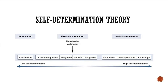Now we move toward the more highly self-determined, intrinsically motivated part of the continuum. Stimulation is when you do an activity because it makes you feel good — because of the pleasure, fun, and excitement you feel. Those are internal rewards, which is why it's considered intrinsic motivation. Then there is accomplishment, which is the pleasure and satisfaction you feel after feeling accomplished — more than just being stimulated and excited, this is about the feeling of accomplishment itself.